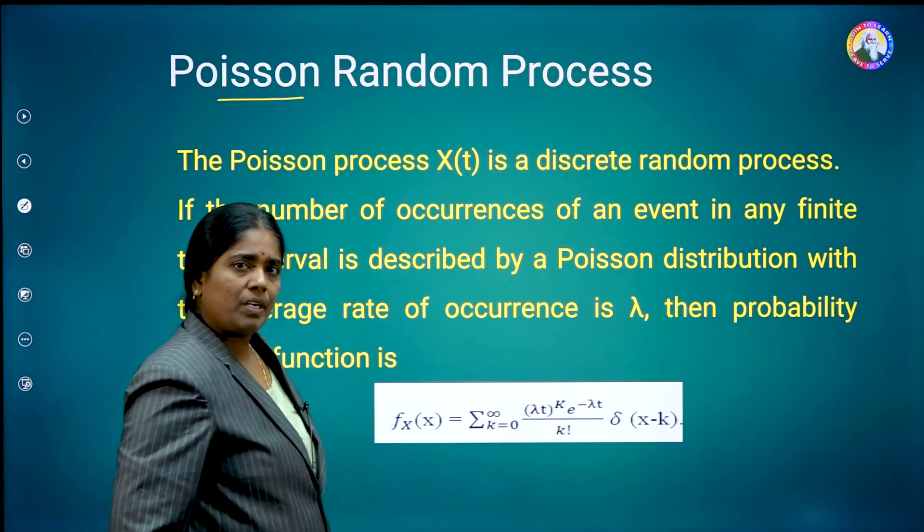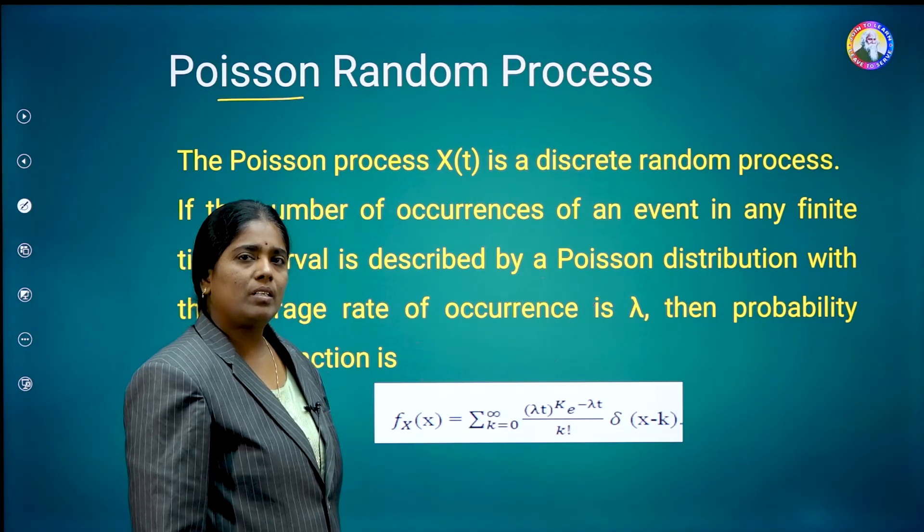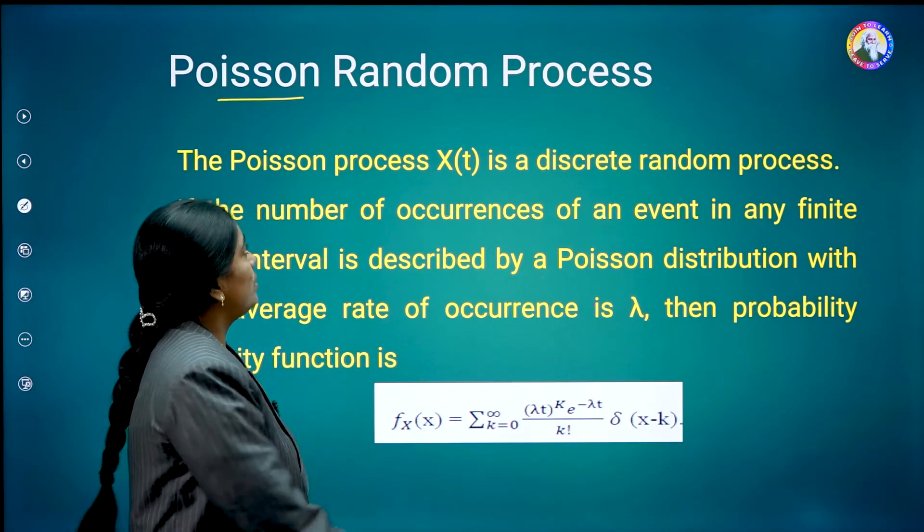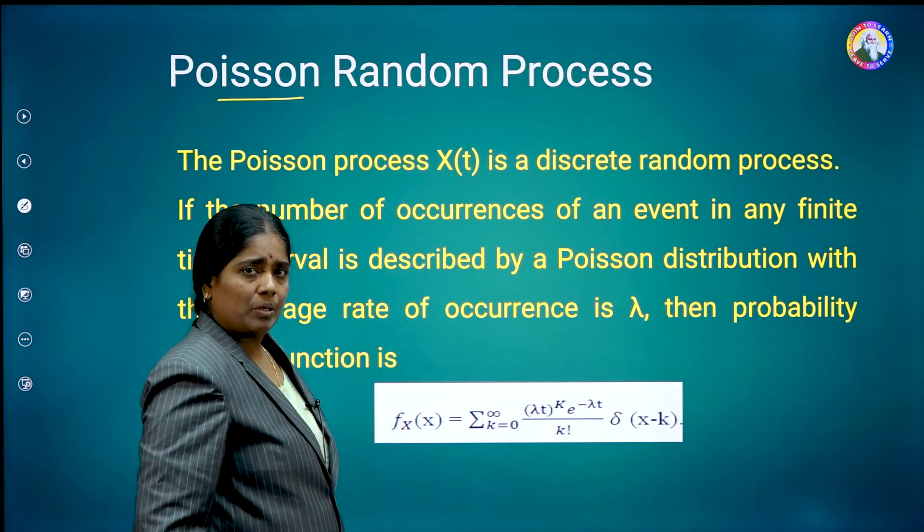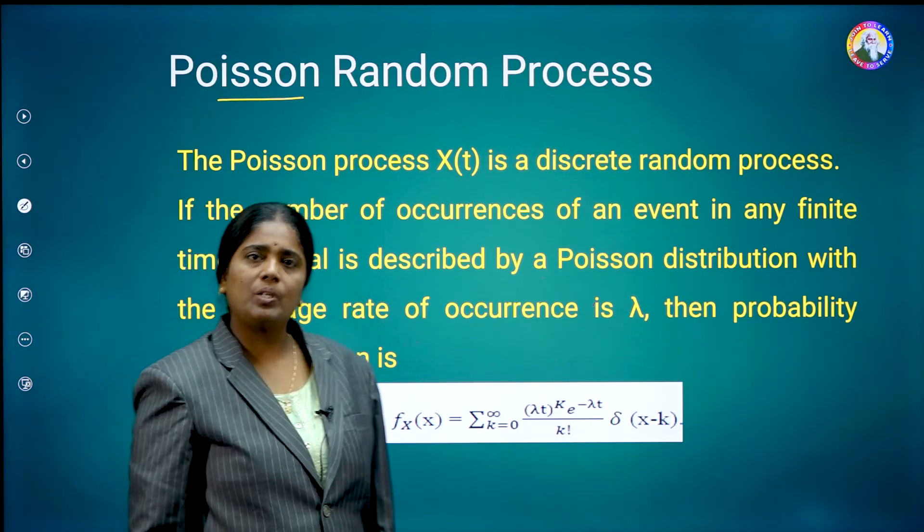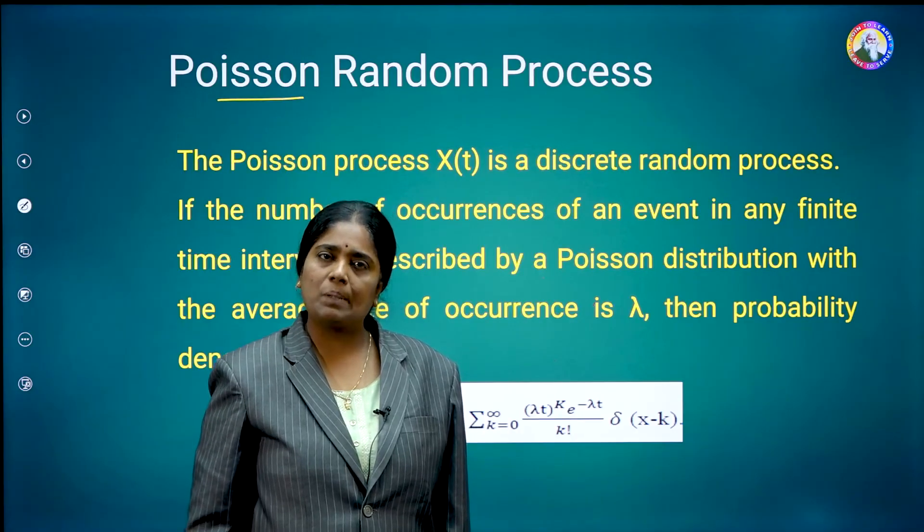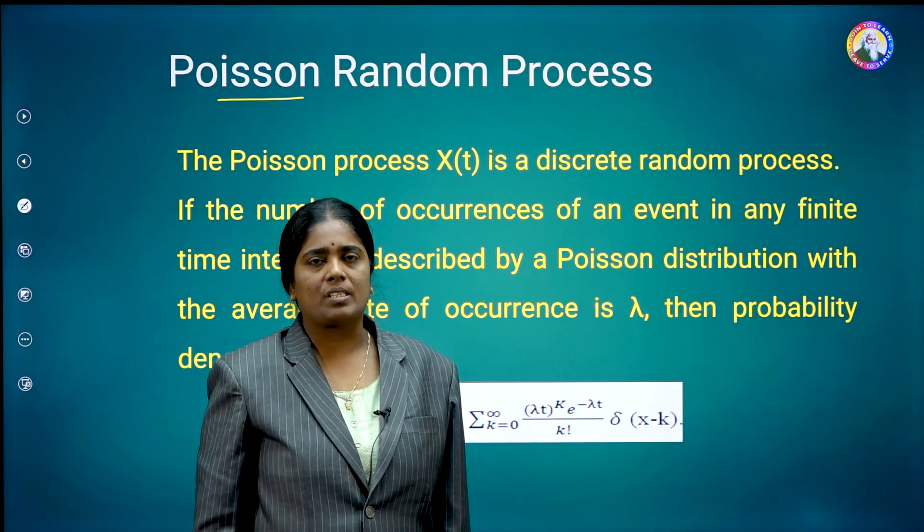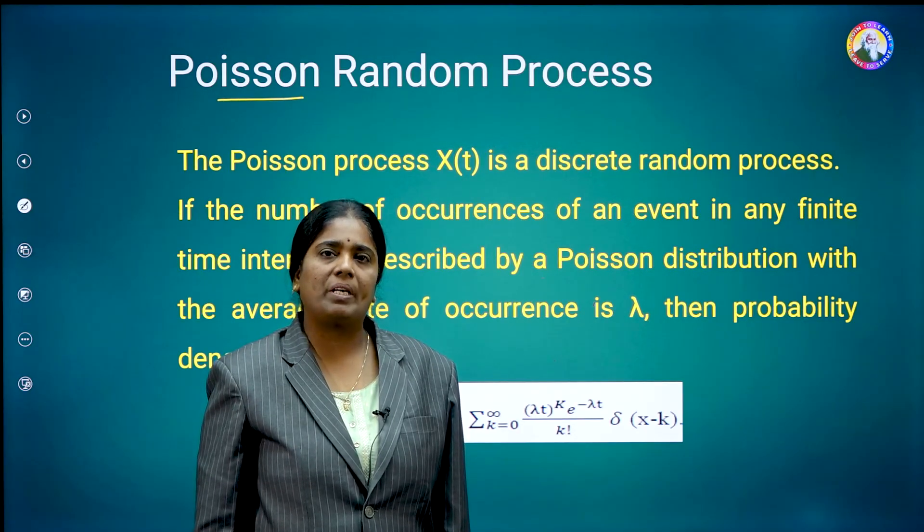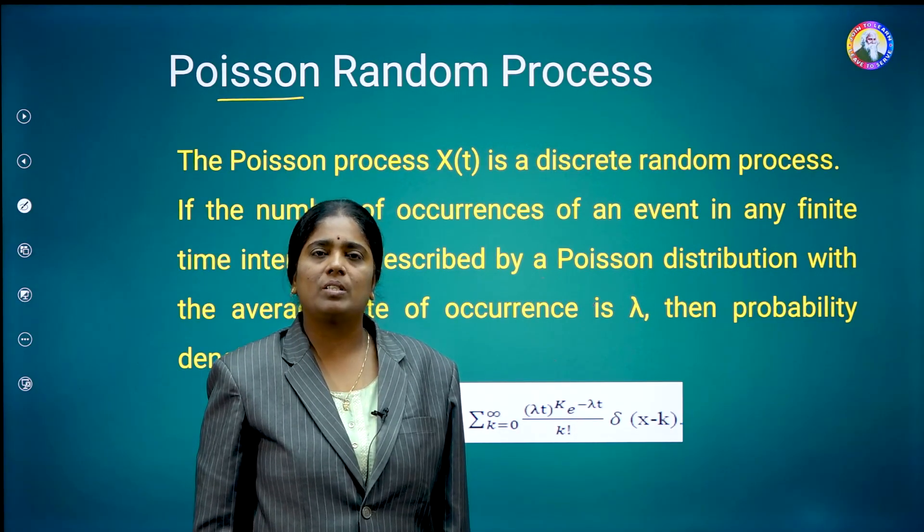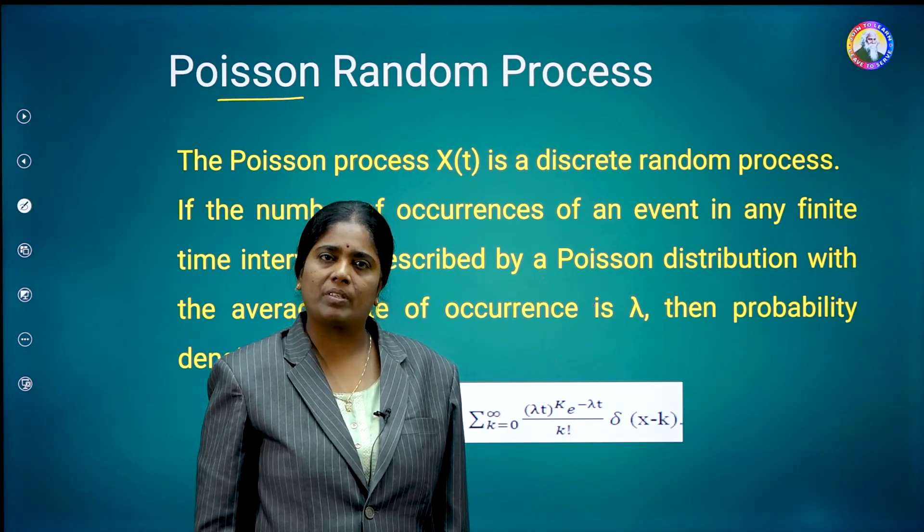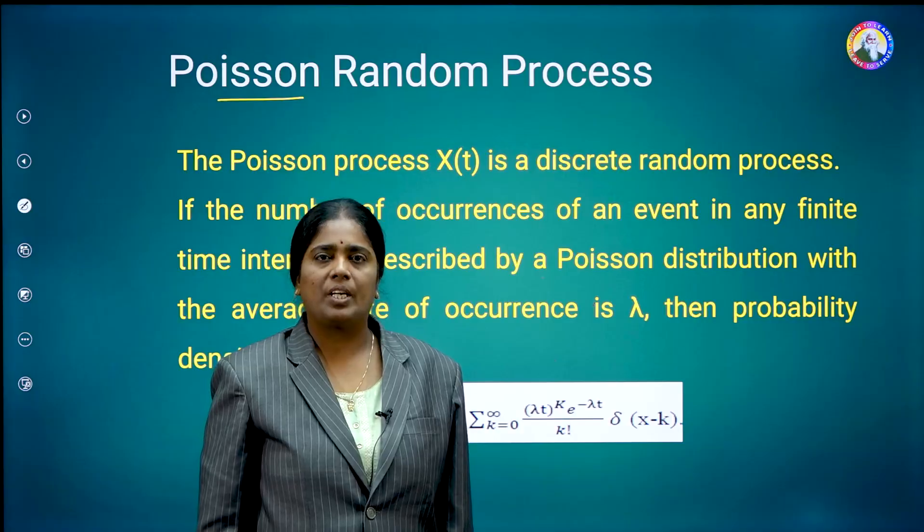For this, if you calculate the distribution function, it consists of the staircase step waveform. So, this is about the Poisson random process. In this video, I have explained two types of random process. The first one is Gaussian and second one is Poisson. These two are used in many applications. That's why these two are the very important random processes comparing with the others. Thank you.